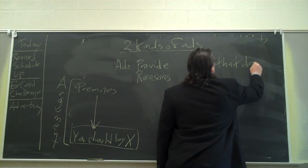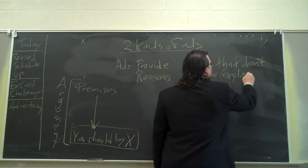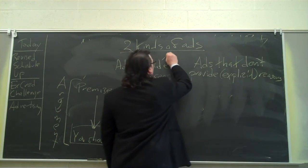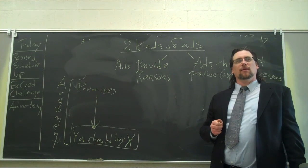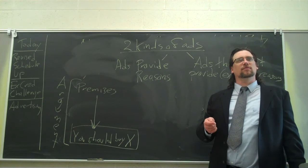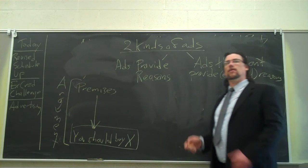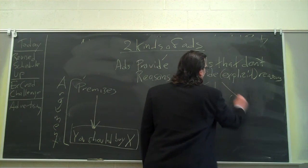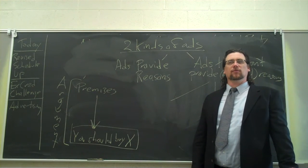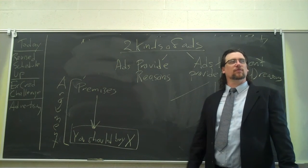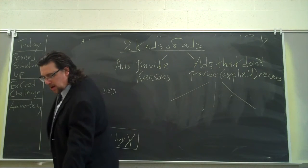Ads that provide reasons. Then we have the opposite - ads that don't provide explicit reasons why we should buy the product. Instead, they do something else. Does that mean they're not providing us any reasons at all? Think back to implicit premises. A lot of arguments are requiring you to assume something or connect the dots. These ads are still expecting you to do that. And there's a couple different techniques that they use. Your book breaks it down into three categories.